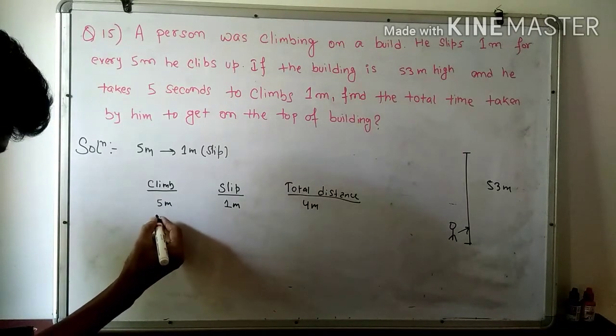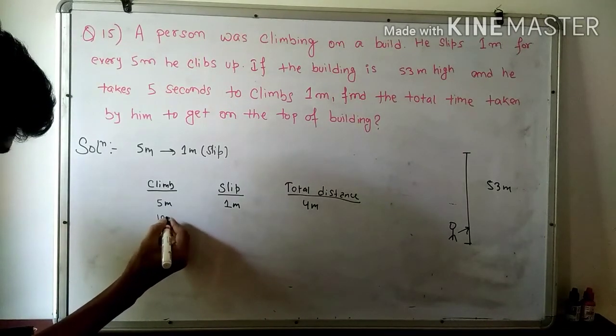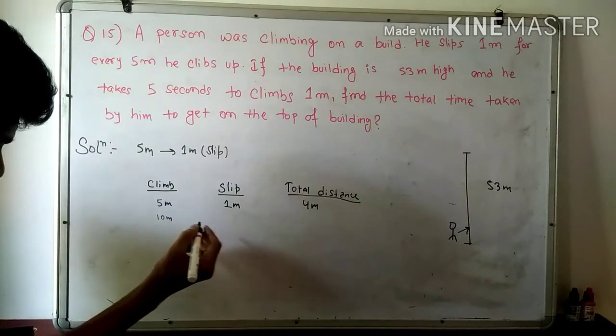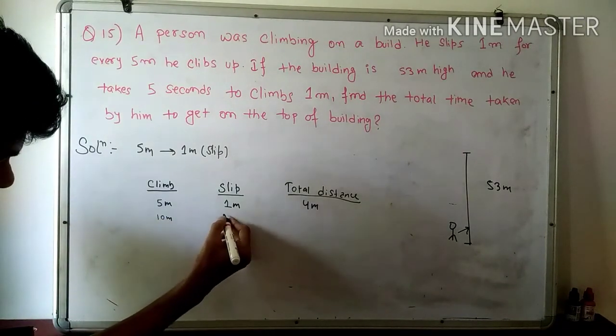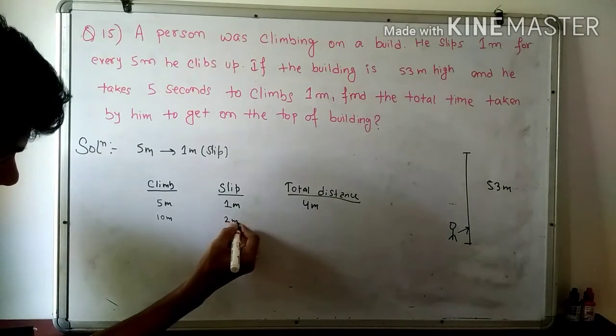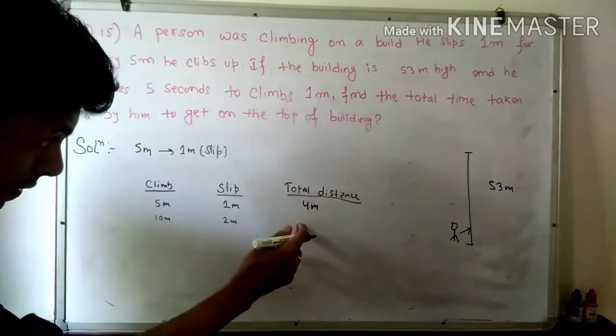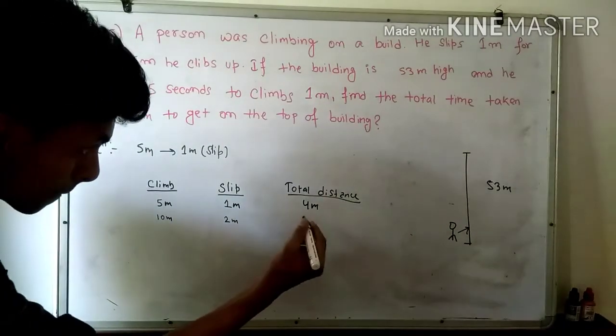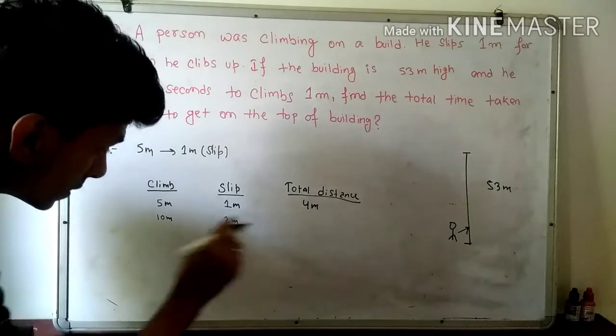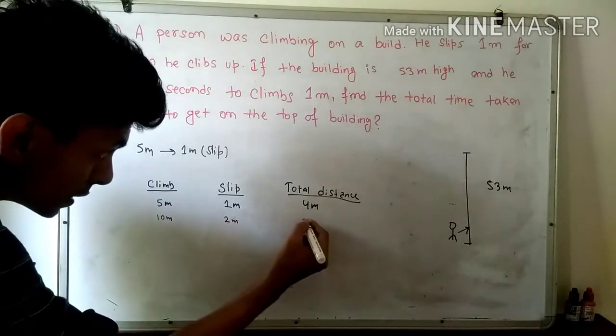When it comes to 10 meters climbed, you will slip 2 meters. So how much is the actual distance? 10 minus 2 equals 8 meters.